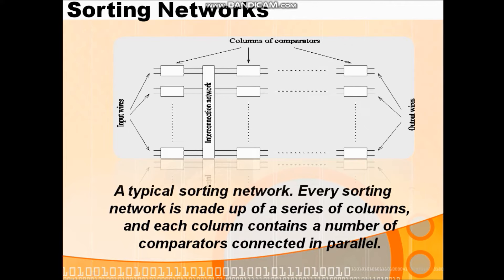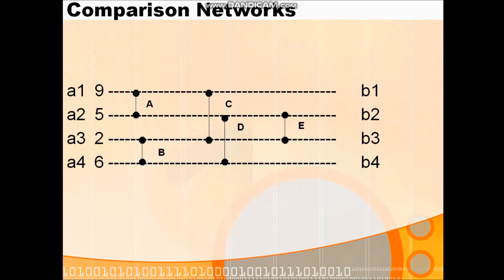The comparators are connected parallelly, performing comparison parallelly and speeding up computation, giving output very quickly compared to our traditional technique. Every sorting network is made up of a series of columns connected in parallel, doing comparison parallelly and giving speeded-up sorted output. Now, the next concept: how to perform the comparison. Consider n comparator networks with inputs a1, a2, a3, a4, where the values on the input wires are 9, 5, 2, 6.